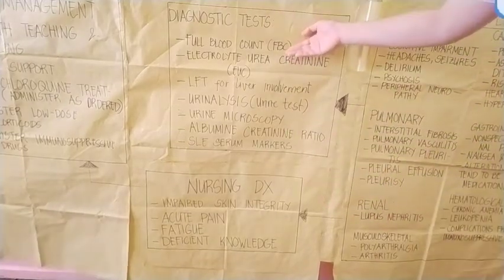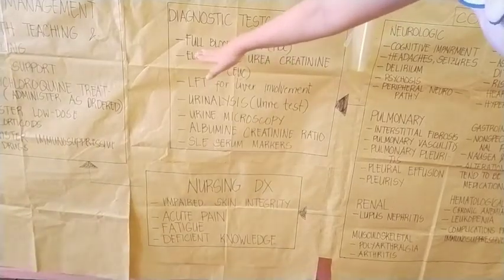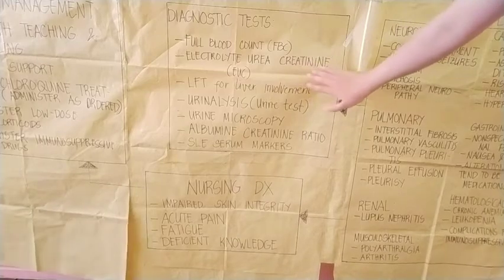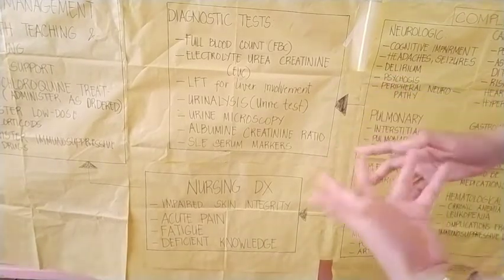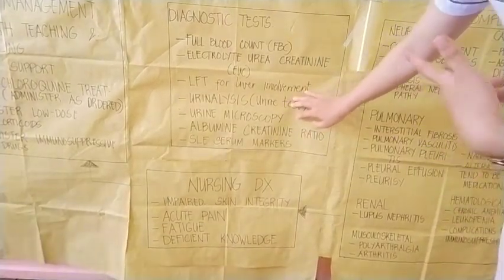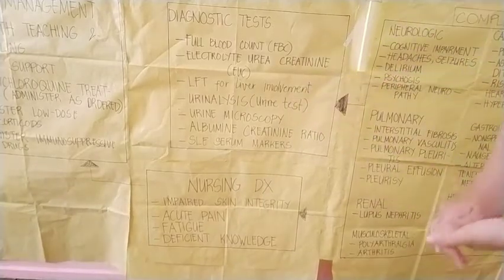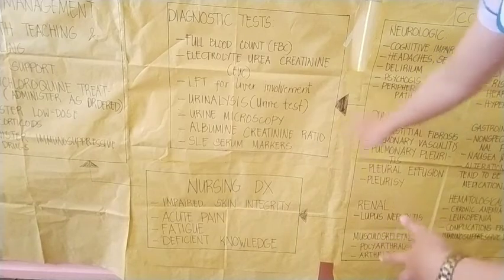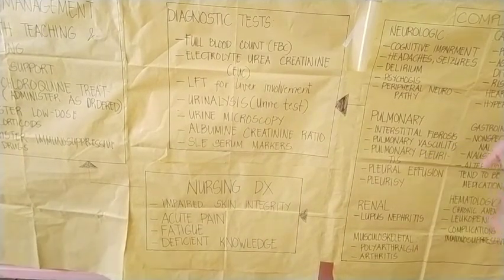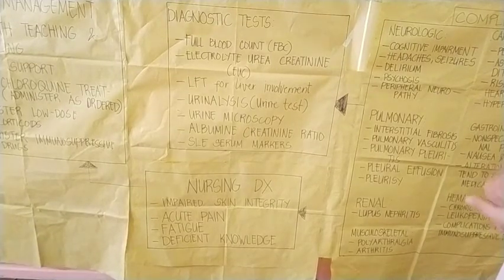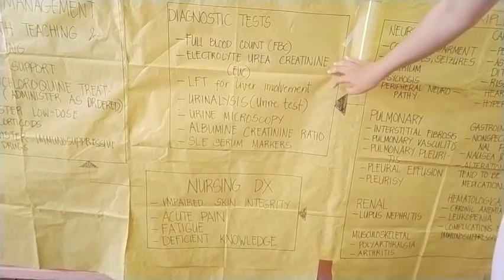Diagnostic tests for SLE include full blood count (FBC), electrolyte/urea/creatinine (EUC), liver function tests (LFT) for liver involvement, urinalysis or urine test, urine microscopy to assess kidney health, albumin-creatinine ratio, and SLE serum markers. SLE serum markers detect the presence of toll-like receptors, cytokines, and antibodies involved in the development of SLE, as discussed in the mechanism of action.